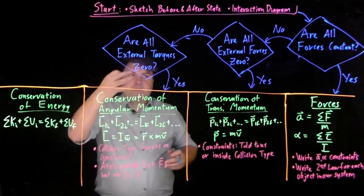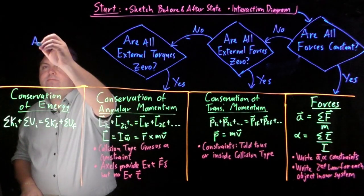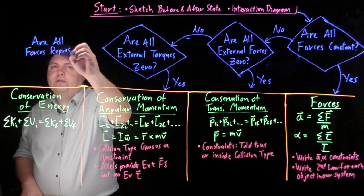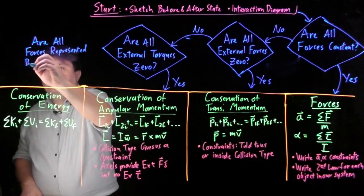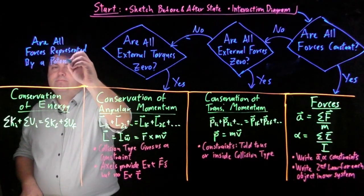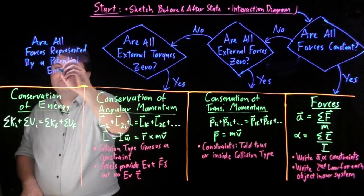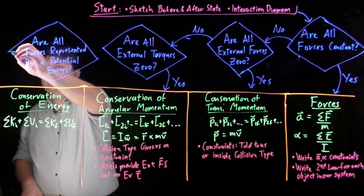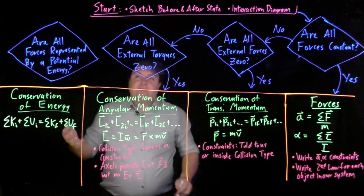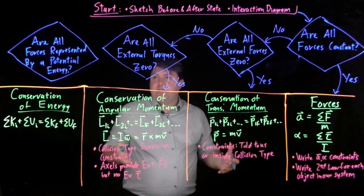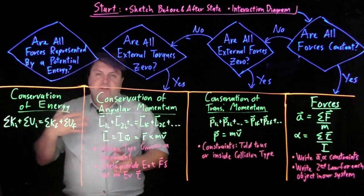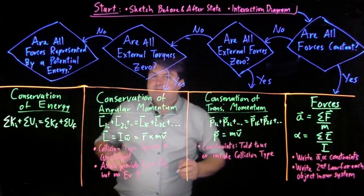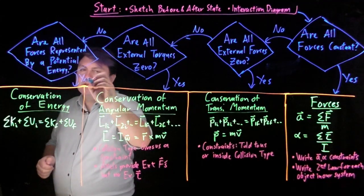So we can still of course say no to this, and then we want to ask, are all forces represented by a potential energy? So if we have gravity, if we have spring force, if we have normal force, things like that, these have potential energies. If some of our forces do not have potential energies, like friction, drag, things like that, then we might not be able to say the conservation of energy, but we can still say yes here.